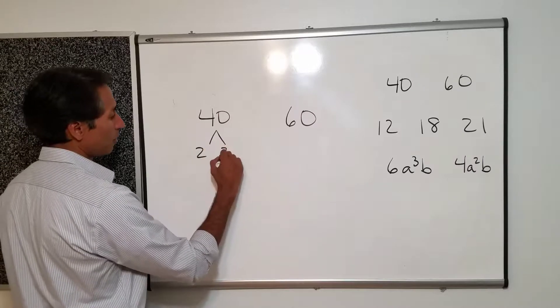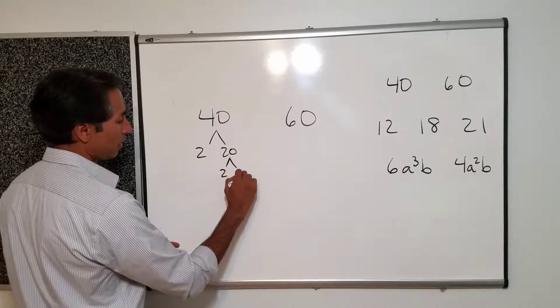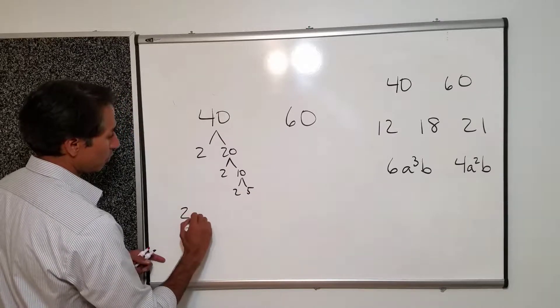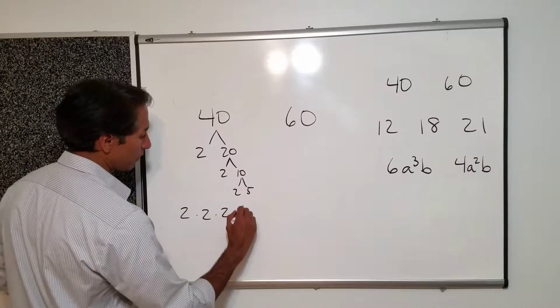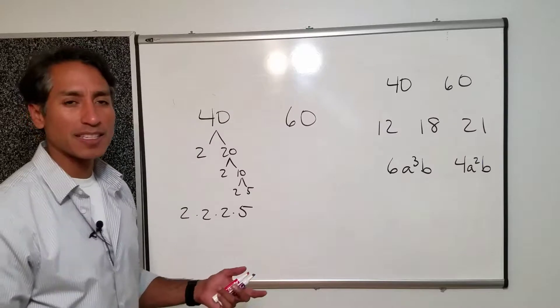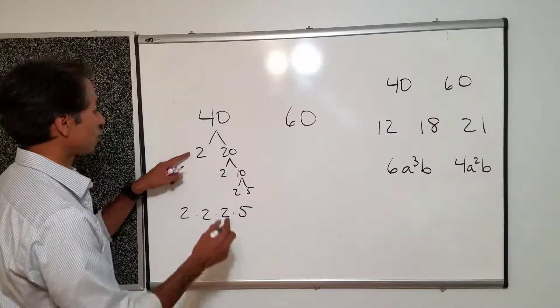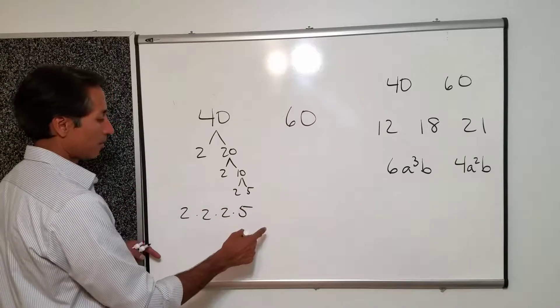So I have 2 and 20, 2 and 10, 2 and 5. So I have 2 times 2 times 2 times 5. If that was too fast again watch my video on prime factorization. All I did was I just factored out the primes and now I'm rewriting them.